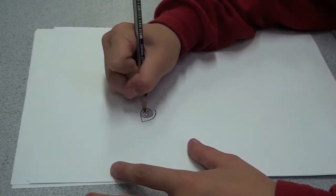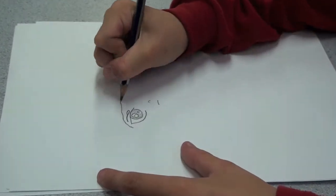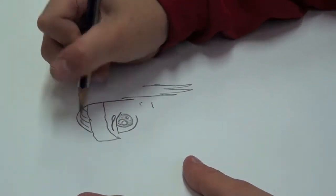First you start with the eye, then draw half of the headband. After that, draw the logo on the headband, then draw a line through the logo.